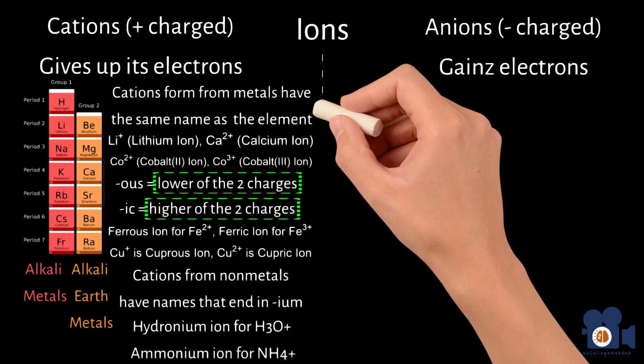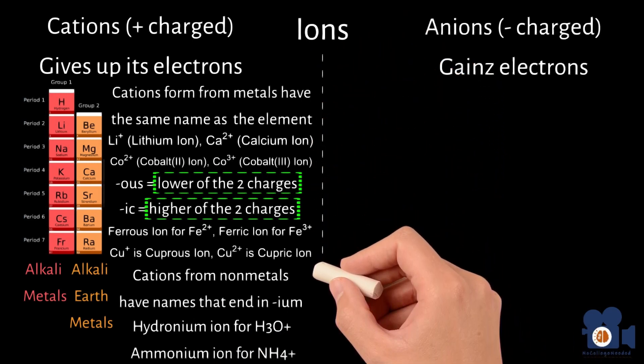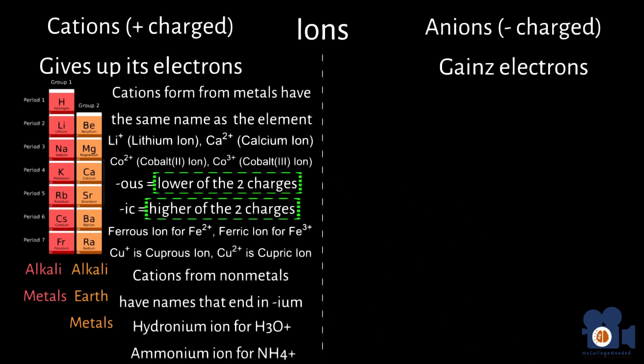Naming for anions is slightly different. If the anion is a single element, replace the ending of the element with an IDE, such as the hydride for H-, oxide for O2-, and nitride for N3-.